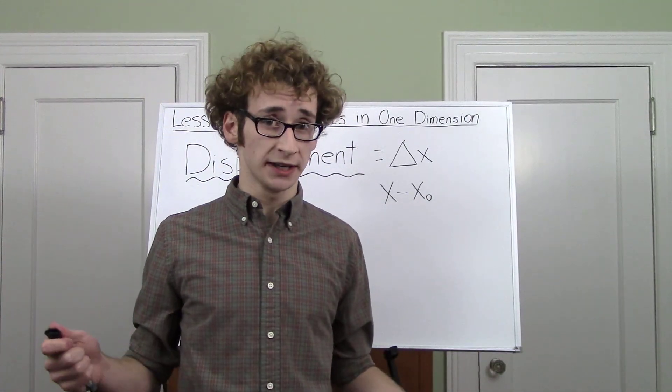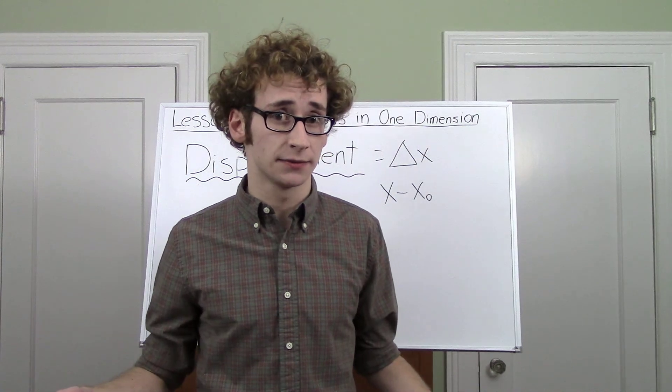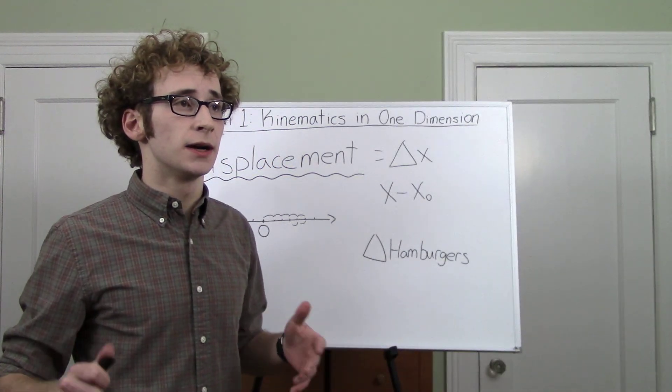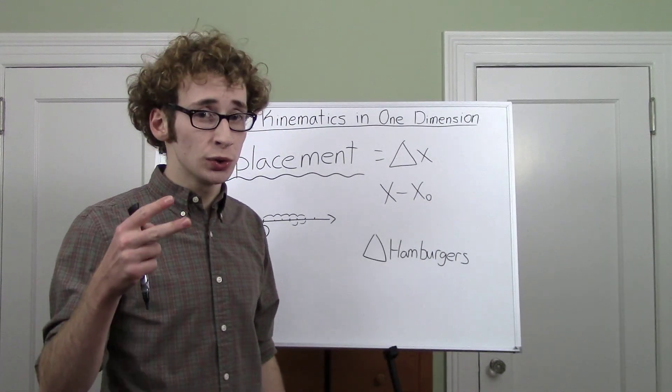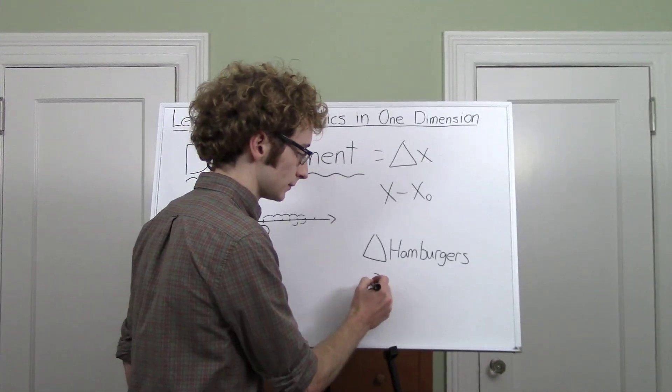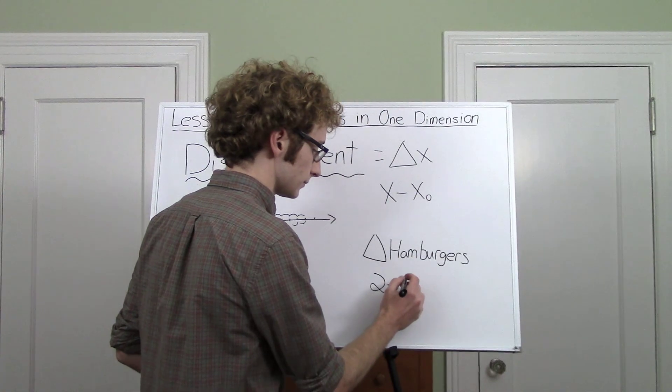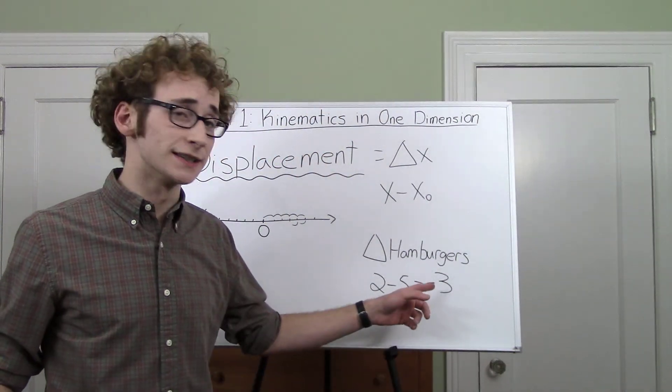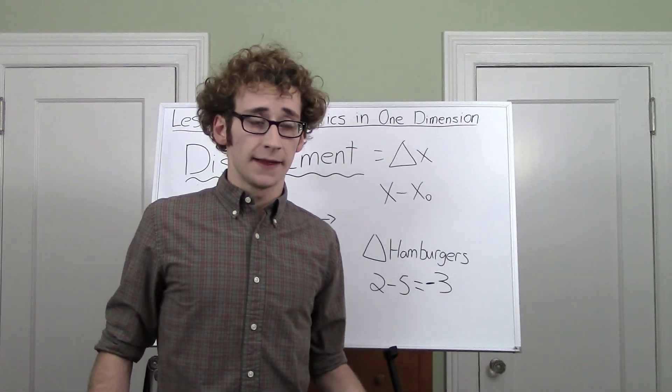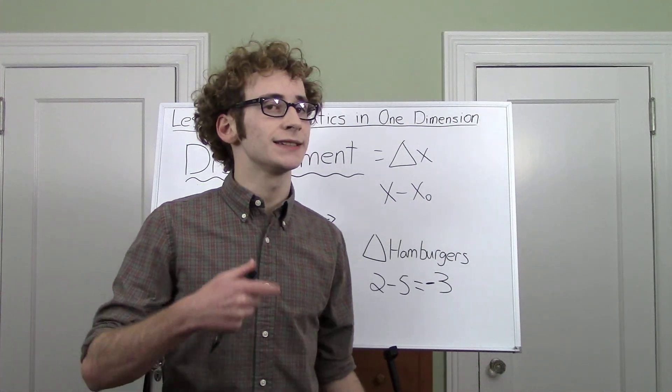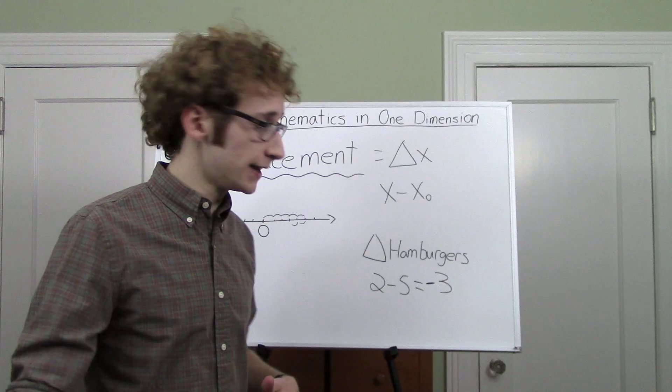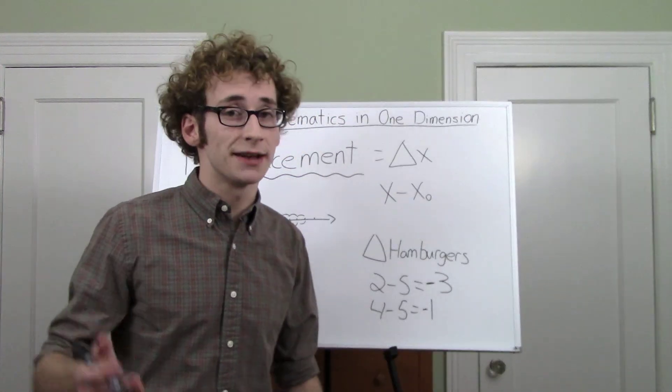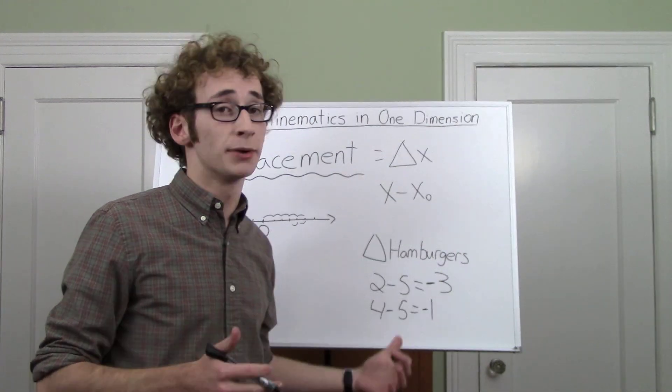When you see it without a little subscript, that means it's final, and the little zero usually means initial. Say I've got five hamburgers, and I want to eat some and then figure out how much I have left, and what my change in number of hamburgers was. So delta hamburgers. I've got five, and then I eat a couple, and then a friend eats one, so then I've got two left at the end. So final is two minus initial, which was five, equals negative three. My change in number of hamburgers was minus three.